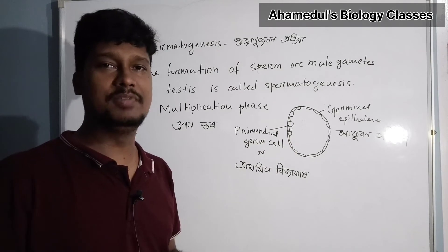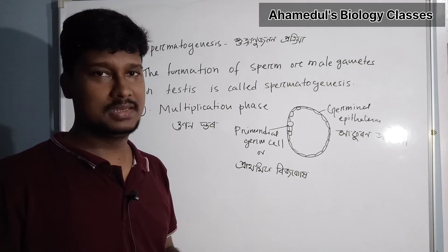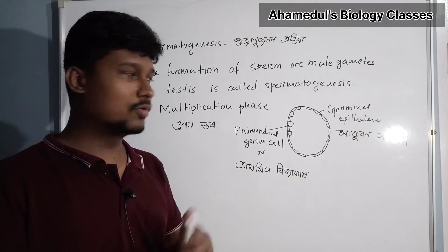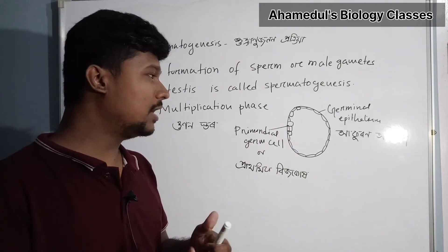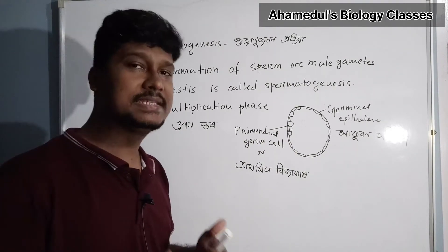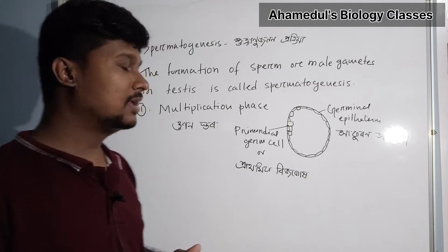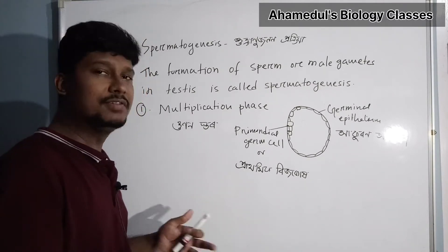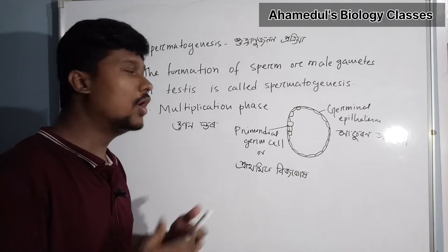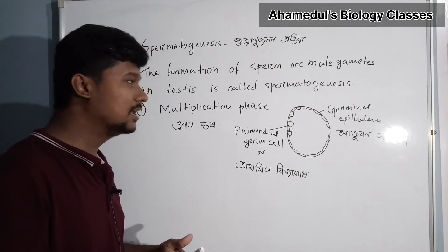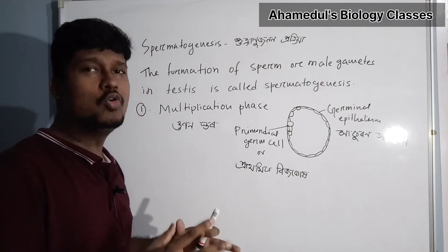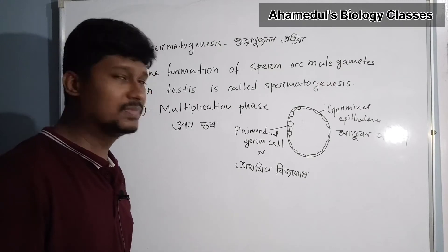The primordial germ cells undergo mitotic cell division. This mitotic cell division is very important in the multiplication phase of spermatogenesis.